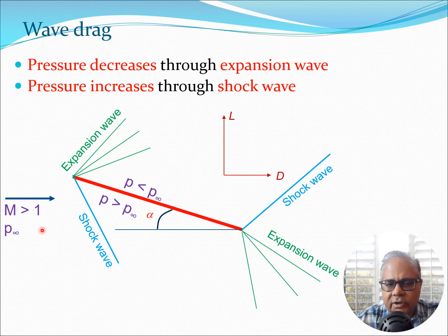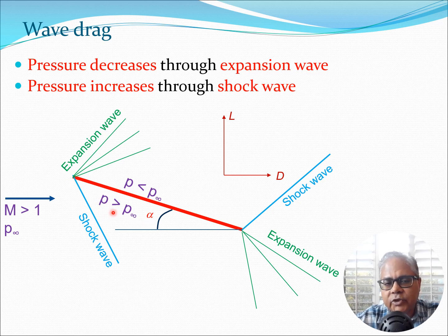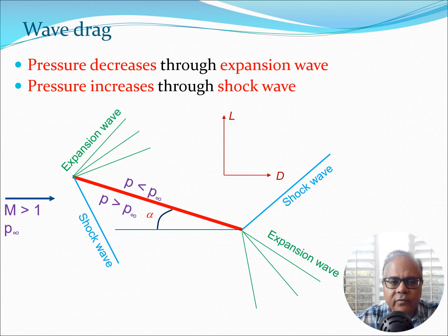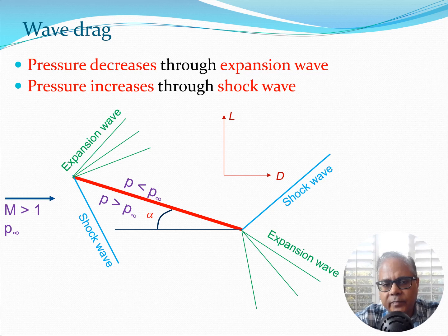The net result of this whole system is that because of the expansion wave, pressure on the upper surface is going to decrease, so P is going to be less than P-infinity. Recall P-infinity is the pressure in the free stream, and below the lower surface of the flat plate the pressure is actually going to be greater than P-infinity. So this pressure differential means lower pressure above and higher pressure below, which generates lift, and there will also be a component of drag, giving the wave drag component in this Mach-number-greater-than-one situation.